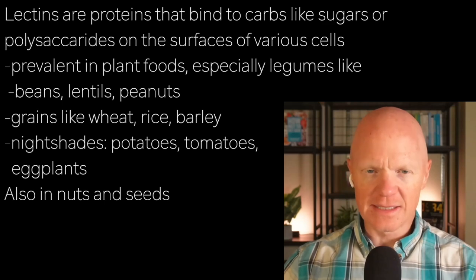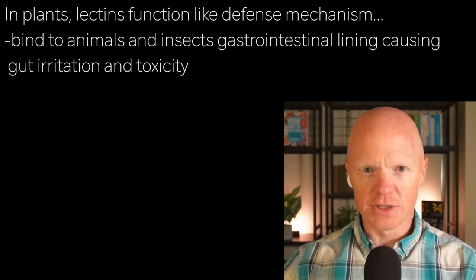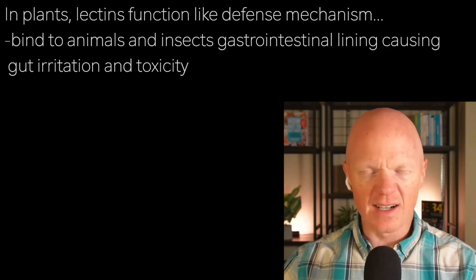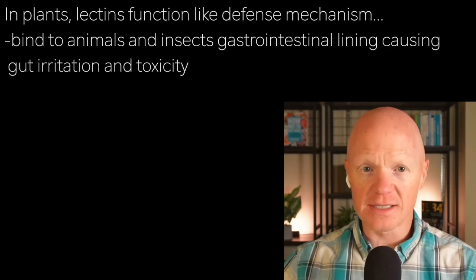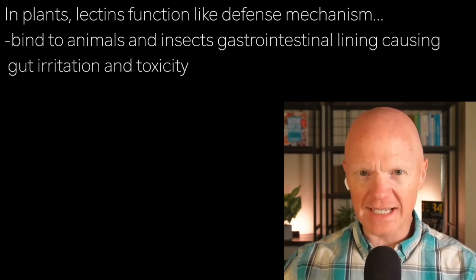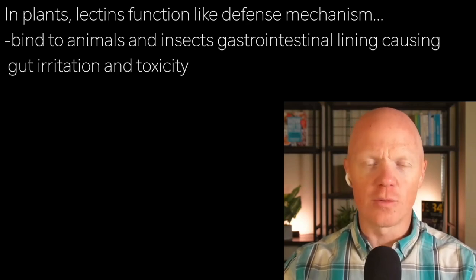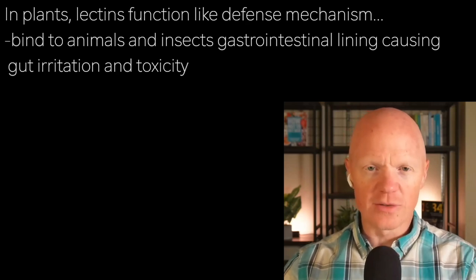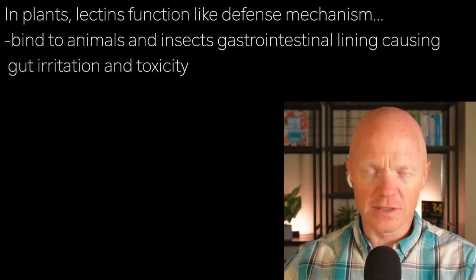Lectins are also found in nuts and seeds. In plants, lectins function as a defense mechanism, deterring consumption by other animals or insects by binding to their gastrointestinal lining, causing gut irritation, and even potentially contributing to a level of toxicity. This is reflective of something I've said before: all things that are living want to stay alive, so by chemical or by claw, something is going to attempt to defend itself. And lectins represent one of the chemical defenders that plants will use.